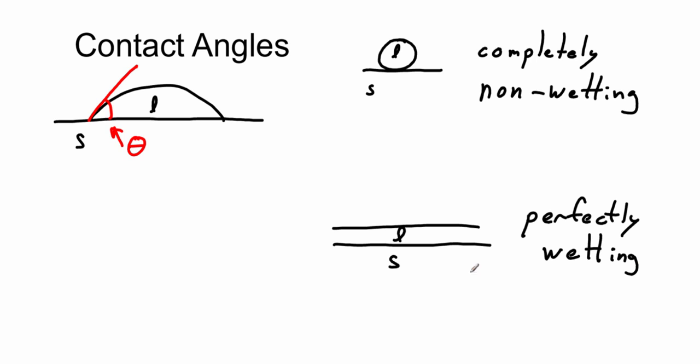So in the case of perfect wetting, we have theta equals zero. In the case of perfectly non-wetting, theta equals 180 degrees.